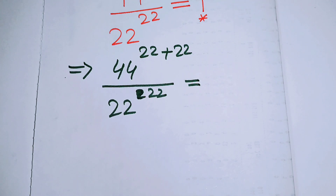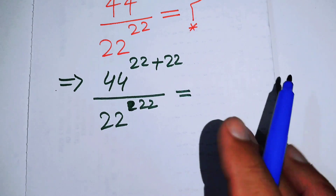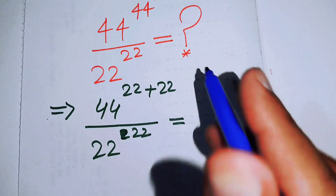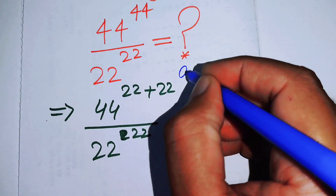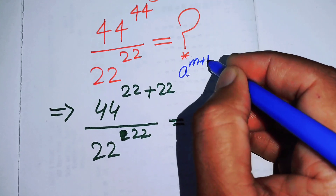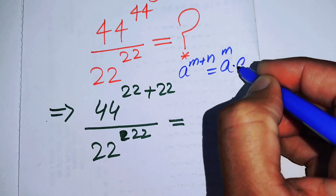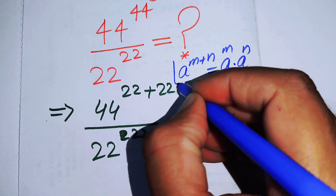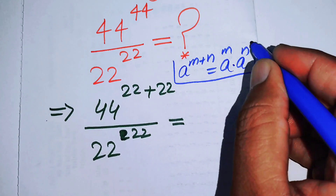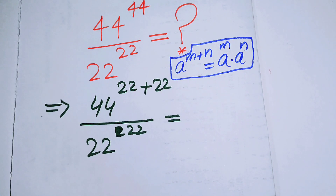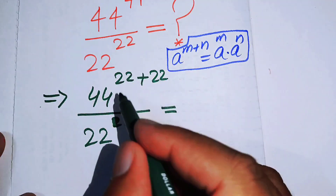We use the exponential law: a to the power of m plus n equals a to the power of m times a to the power of n. We can now apply this law in the numerator.